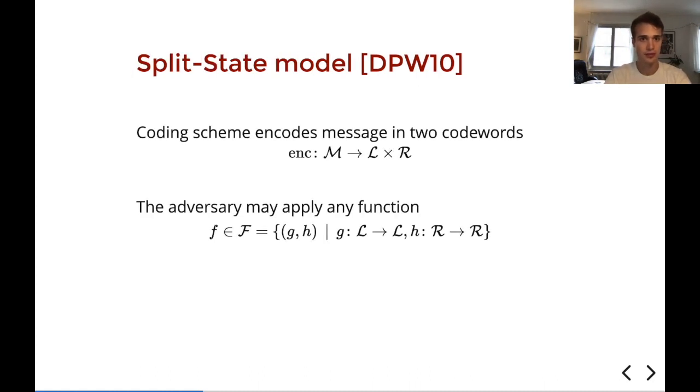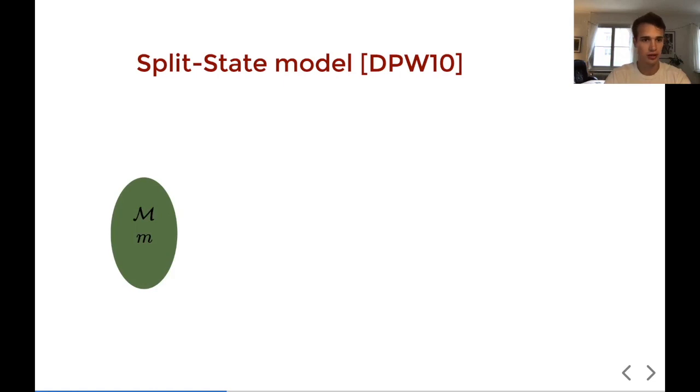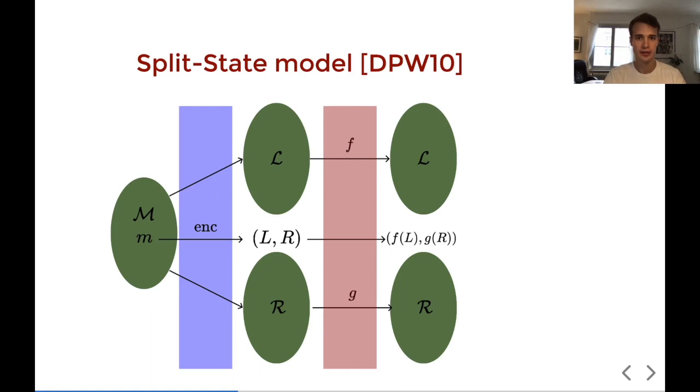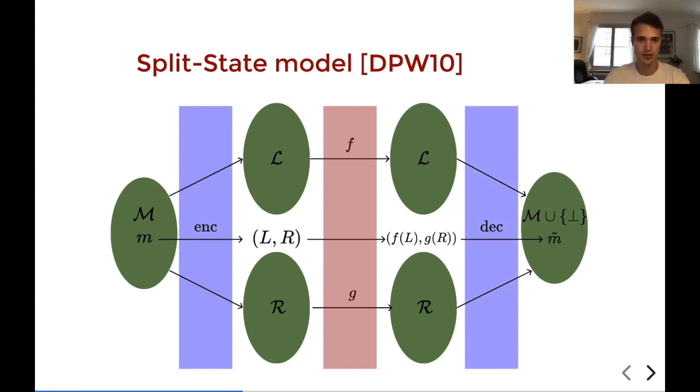The model that we're working in is the split-state model, which was also introduced in the paper by Dziembowski et al. The coding scheme here encodes the message as two separate code words, a left code word and a right code word. And the adversary is then allowed to tamper each message individually. Pictorially, we have a message M that we encode in two separate parts. They are then tampered with independently. And finally, we then decode. So this is the model.